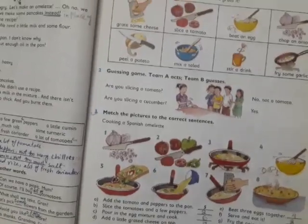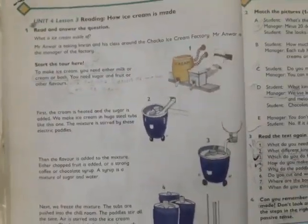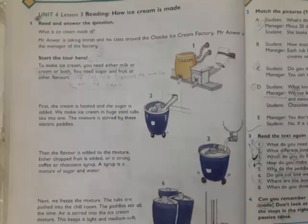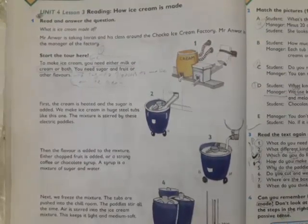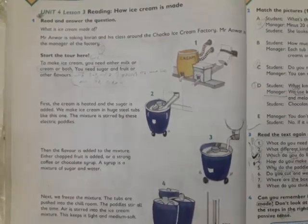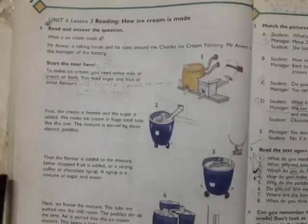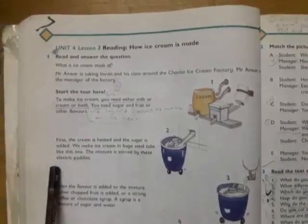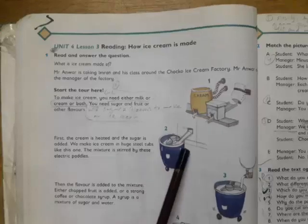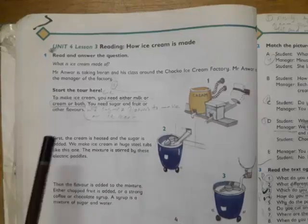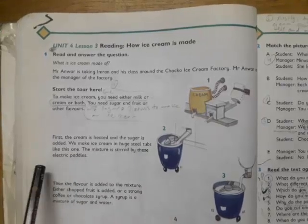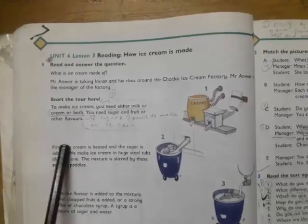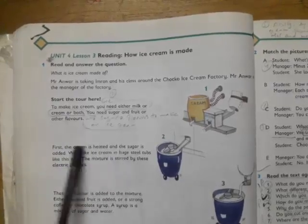So move to the next page. How ice cream is made. Mr. Anwar is taking Imran and his class around the Choco Ice Cream Factory. Mr. Anwar is the manager of the factory. So Mr. Anwar is taking the class for a trip to the factory.